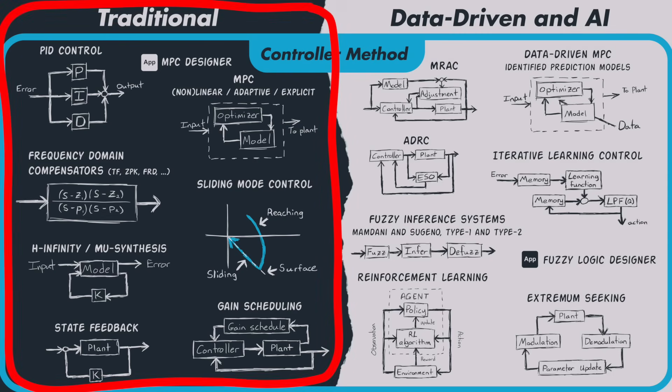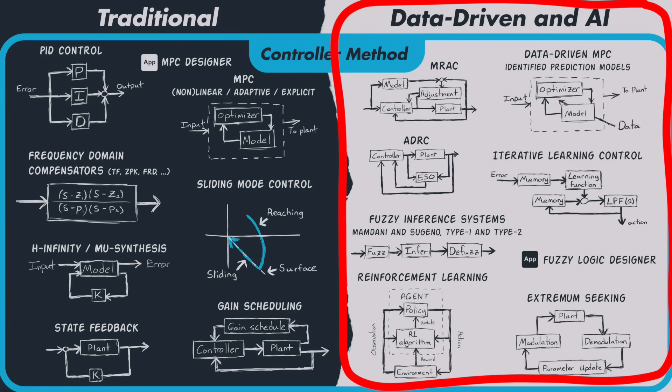All right, so these are just a few of the different control methods that we're calling traditional controllers. And hopefully you have a sense of the breadth of options that we have just within this section of the map. So let's move on over to the data-driven section and see some of the different control methods that are available here.